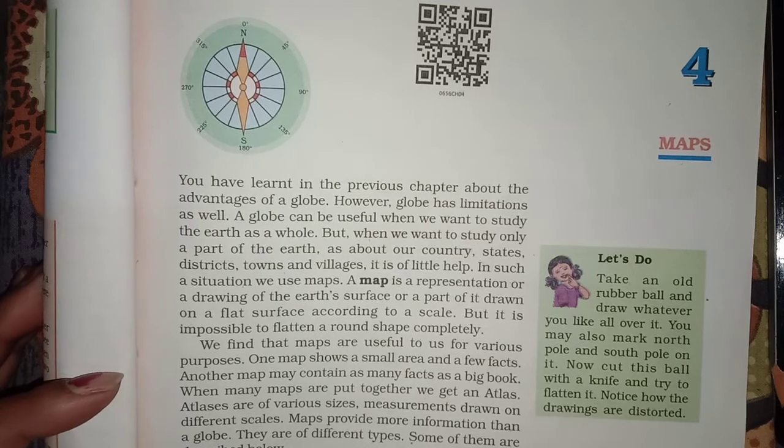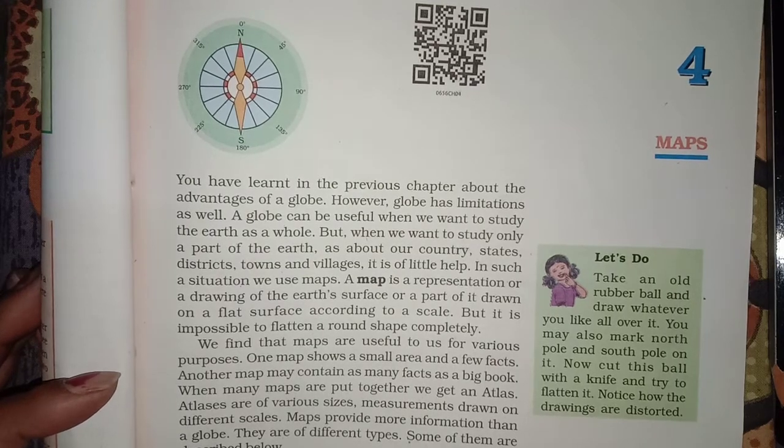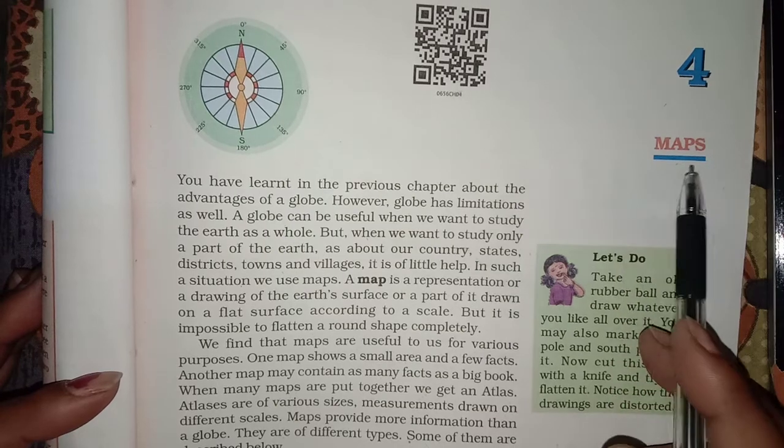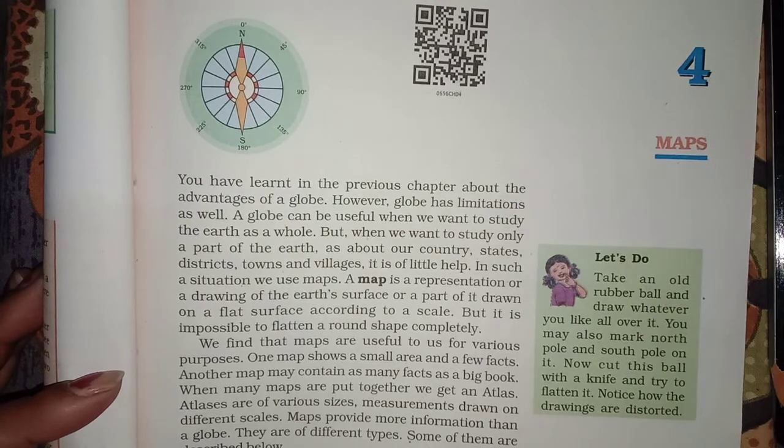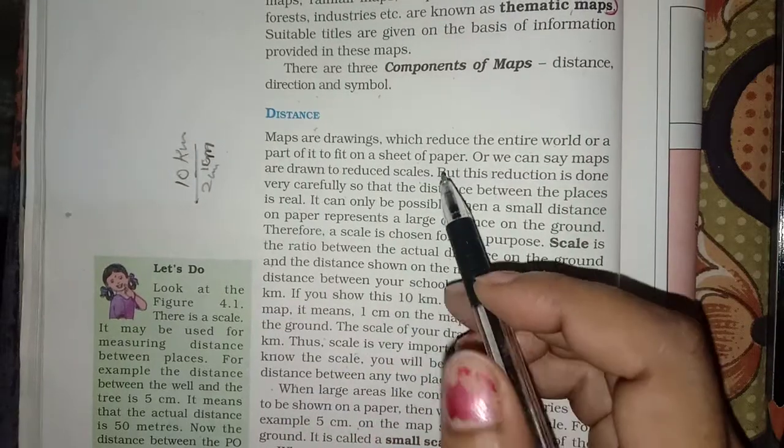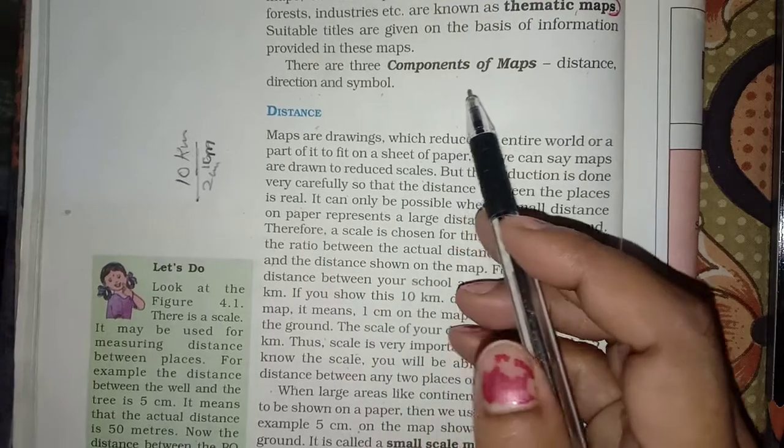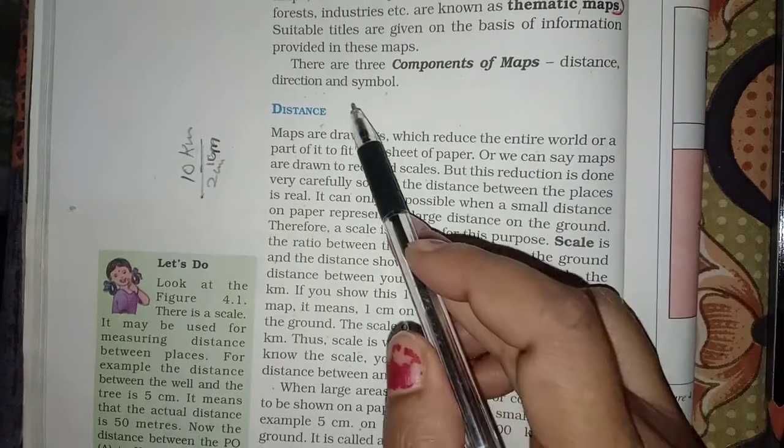Good morning students, we are doing social science of 6th standard and we are doing chapter 4 of geography maps. We are going to discuss the three components of map: distance, direction and symbol.